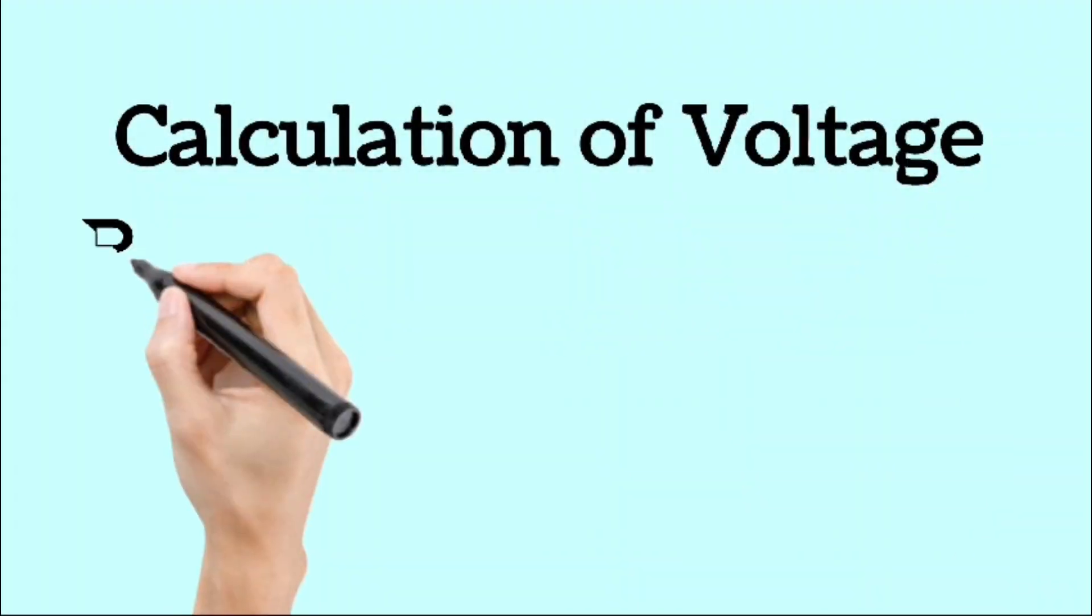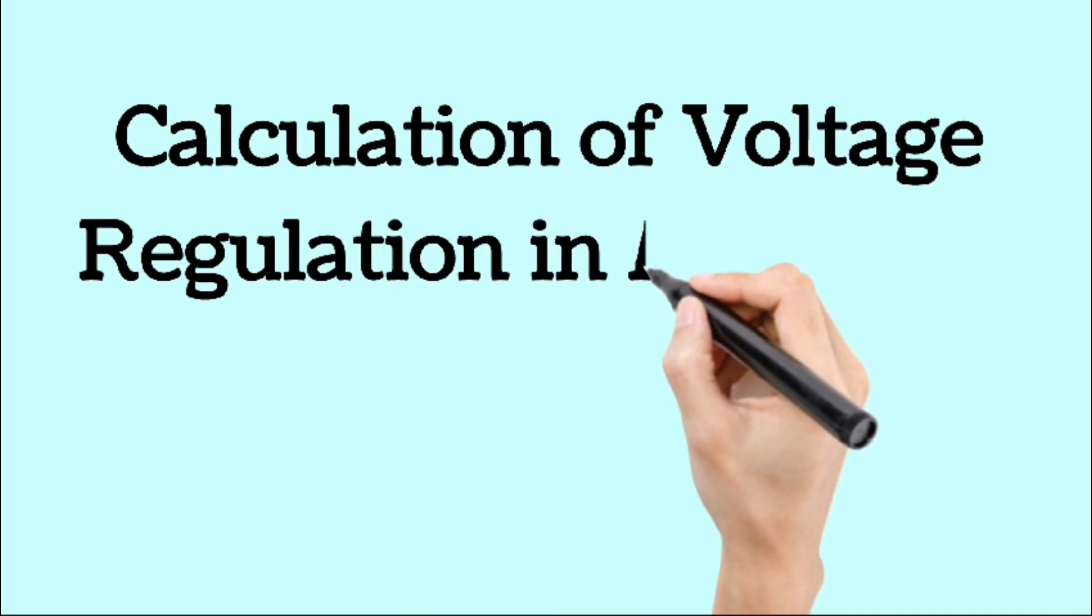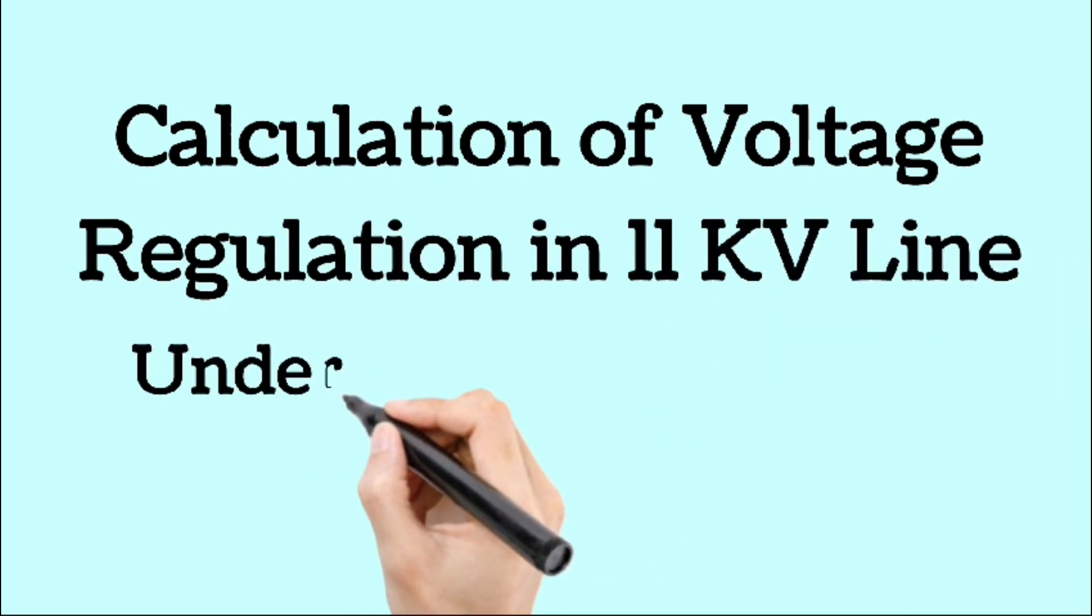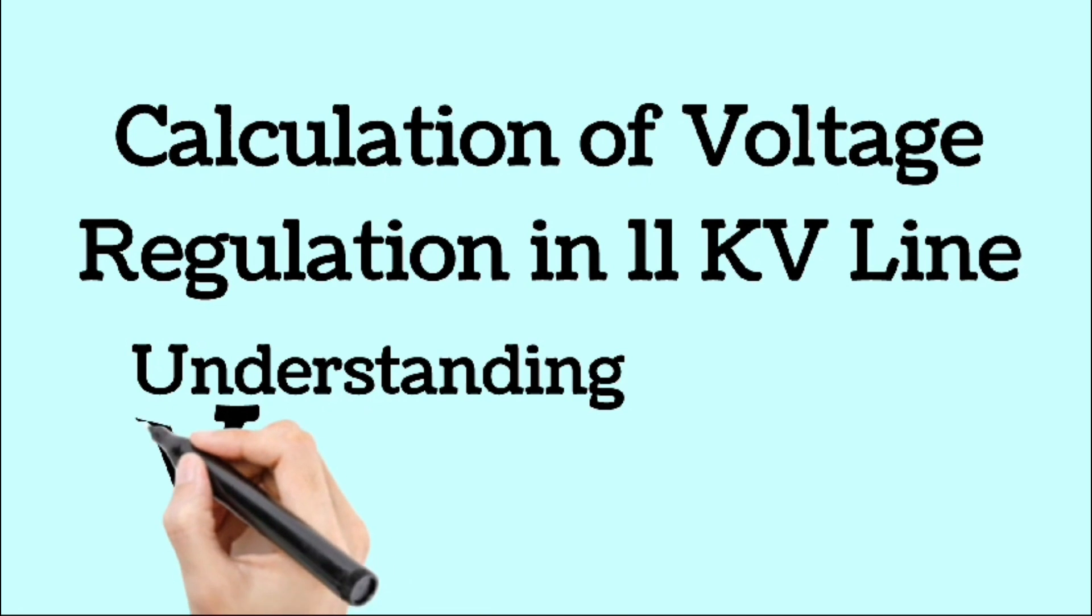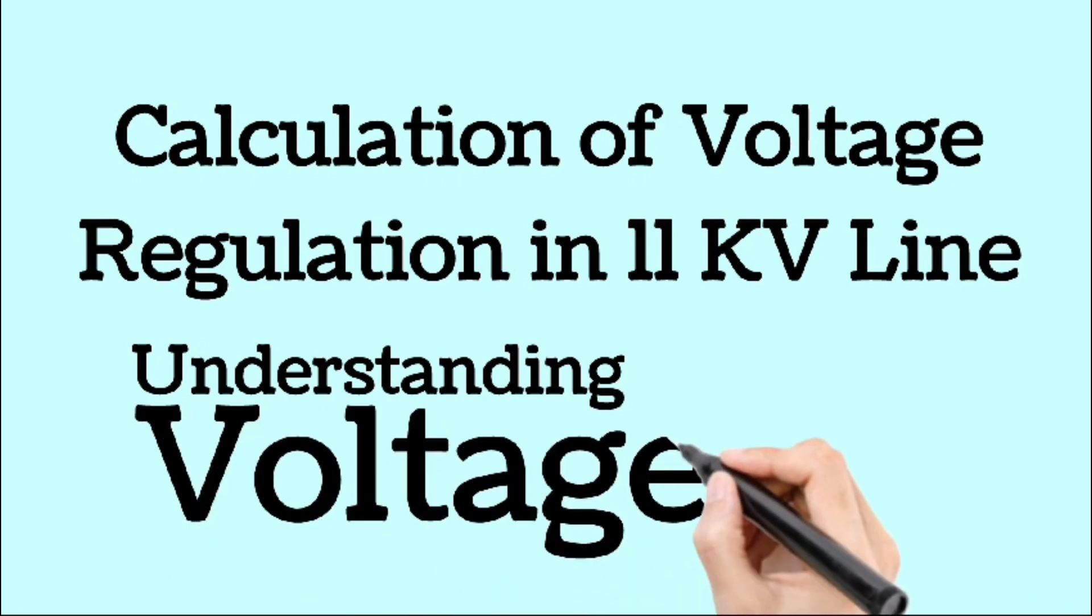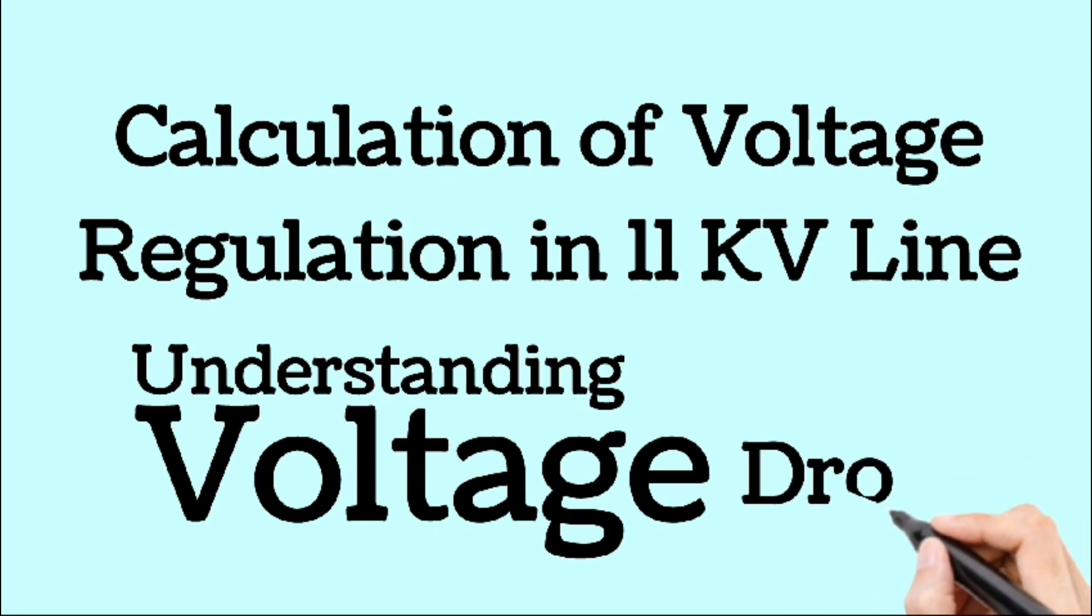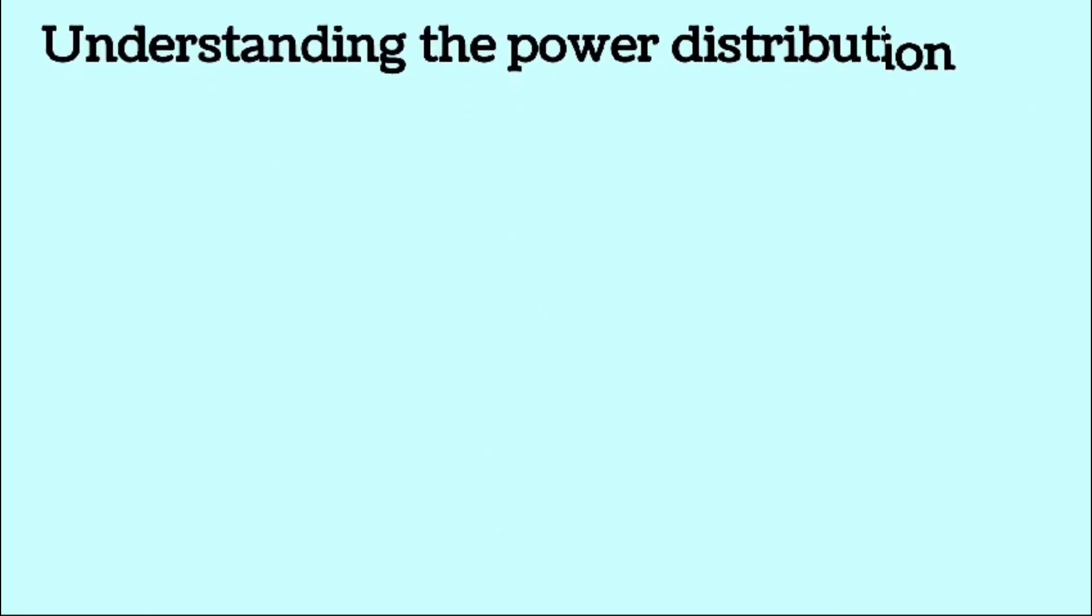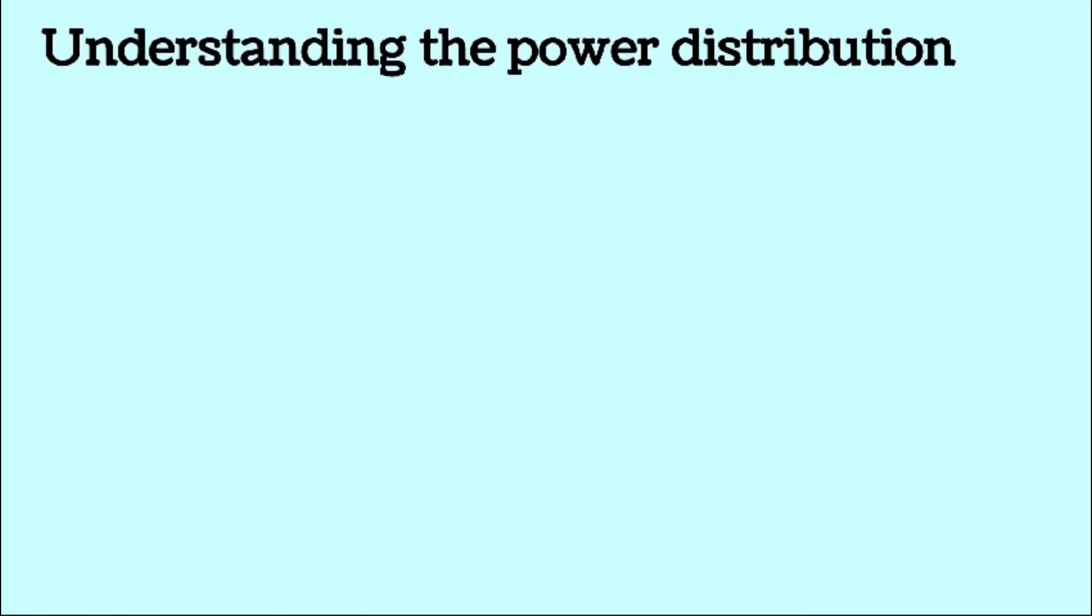Hello engineers, welcome again to this video. Today we learn how to calculate voltage regulation in an 11 KV line at the tail end. In this session we will explore the voltage drop occurring along the line and compare the voltage at the tail end to that at the sending end. Before starting the calculations, let us first understand the power distribution system up to the consumers end.